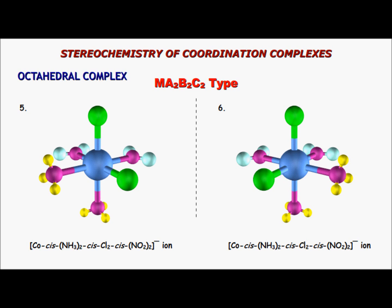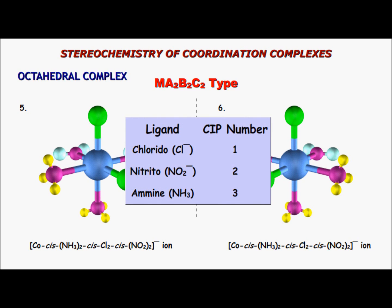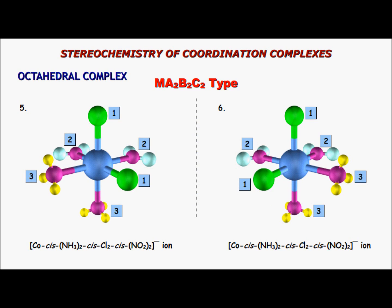The problem is how to name the two enantiomers. The IUPAC recommendation is to give priority to the ligands as per the CIP rule, where the highest atomic number gets the highest priority and the lowest CIP number. The ligand with the lowest CIP number forms the reference axis. Where two such reference axes exist, IUPAC states that the other ligand of the reference axis should have the highest CIP number — so that axis is chosen as the reference axis.